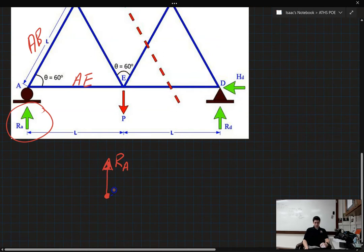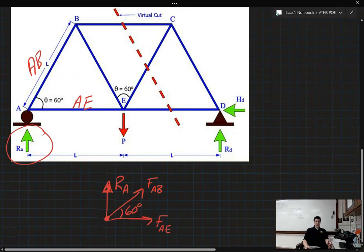And now we need to figure out what these other two look like. So I'm actually going to draw them like this. So this force right here is at a 60 degree angle. And this is our force from member AB. And the one on the bottom there, we're going to label that as FAE.